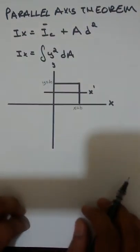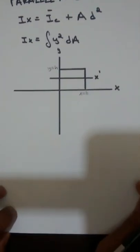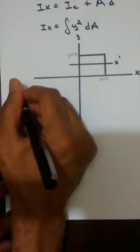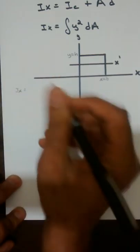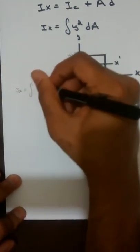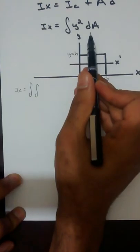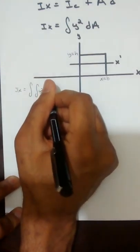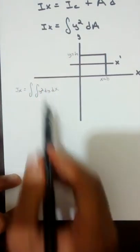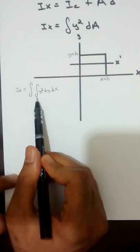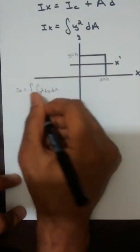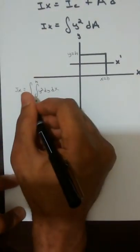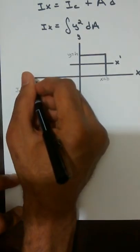We are going to apply the parallel axis theorem as follows. I sub x is going to equal the integral over the region A, which will actually be a double integral. We are going to integrate y squared dY dx. We go from zero to h on the y-axis, and from zero to b — the base of the rectangle — on the x-axis.